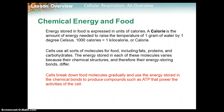Cells break down food molecules gradually and use the energy stored in the chemical bonds to produce compounds such as ATP that power the activities of the cell. This is a gradual process of breaking down food molecules.